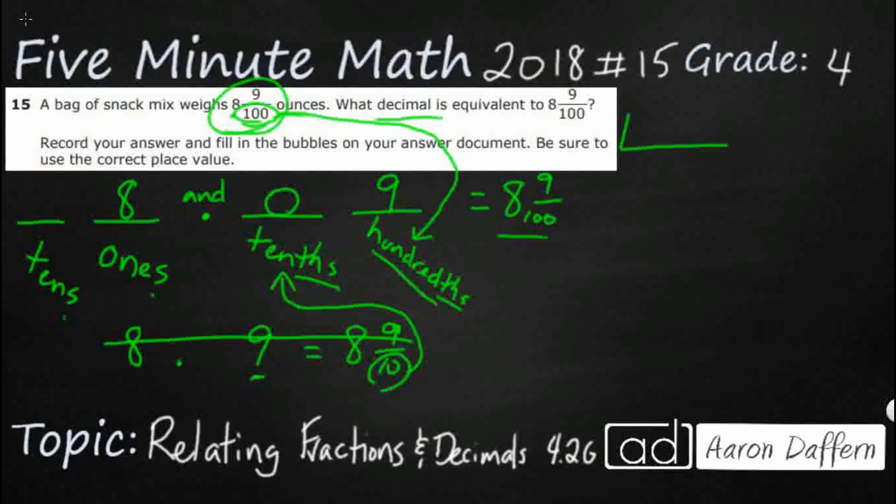Now, we need to bubble this in. So if we're looking at our bubble chart, you're going to get something that looks like this. You've got a decimal right there. You're going to have two spots to the right of the decimal and three spots to the left of the decimal.